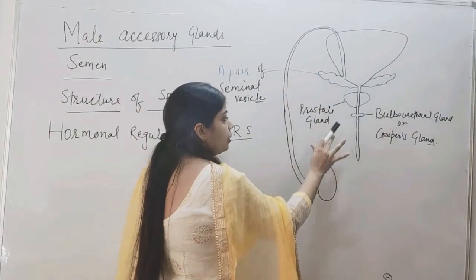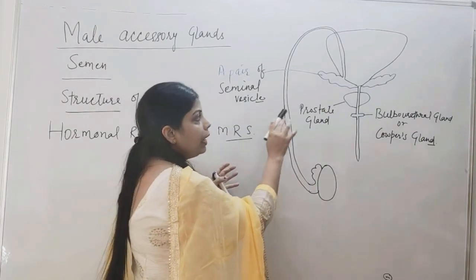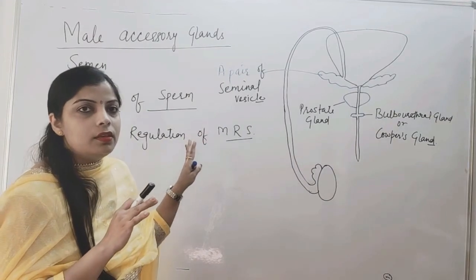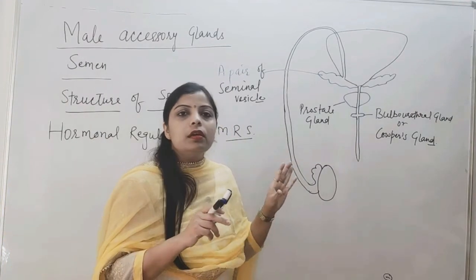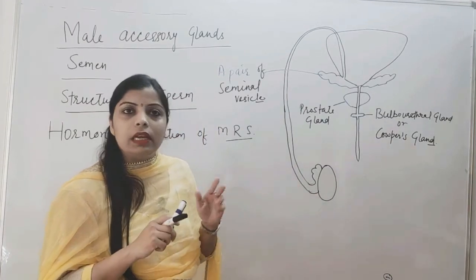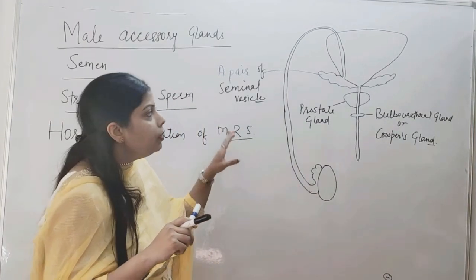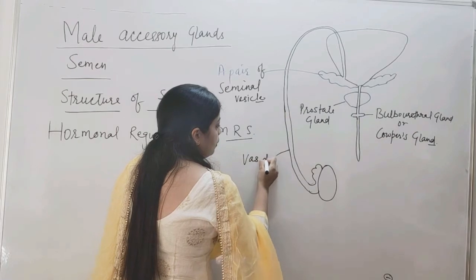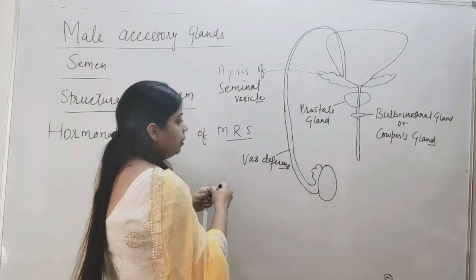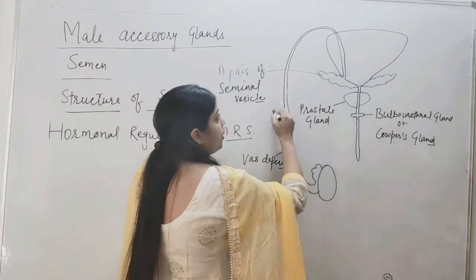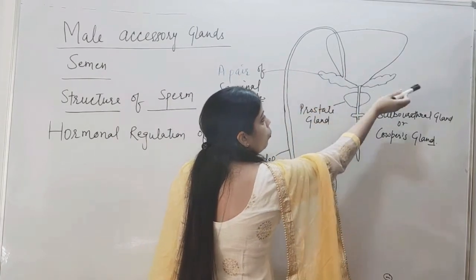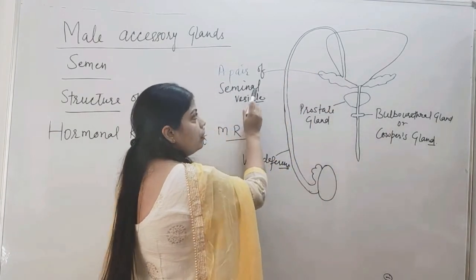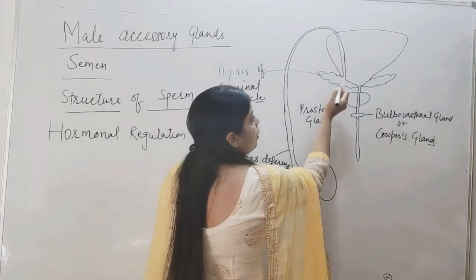We can understand this with the help of a diagram where I have highlighted only the glands, since we are going to discuss about the glands specifically. We had already discussed the full structure of the male reproductive system in the previous lecture. Here we can see that the vas deferens is going to join with the seminal vesicle on both sides, thereby forming an ejaculatory duct.